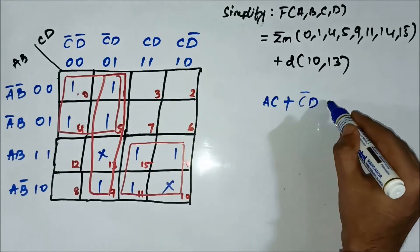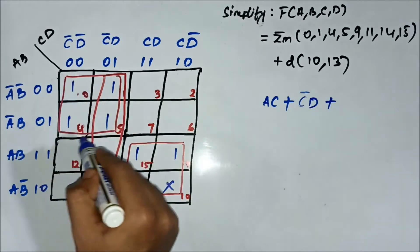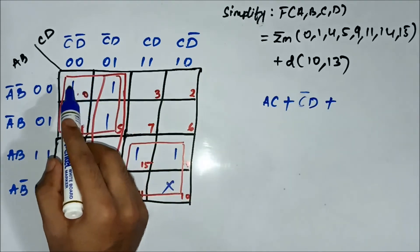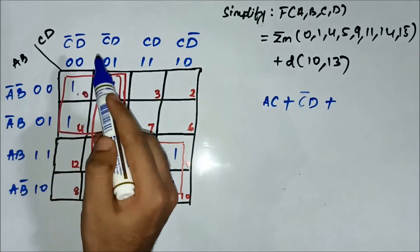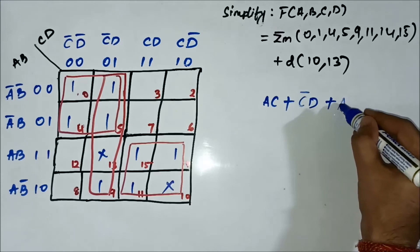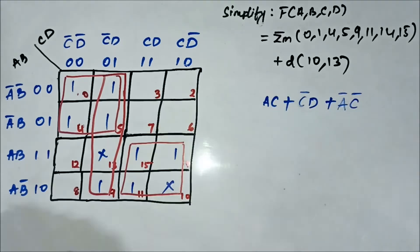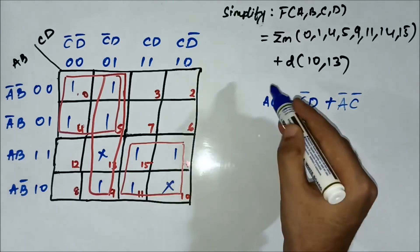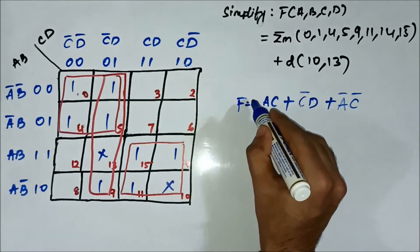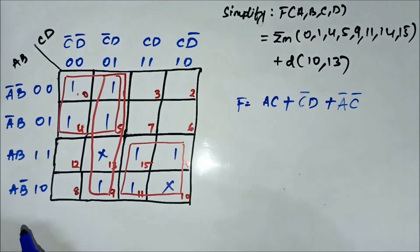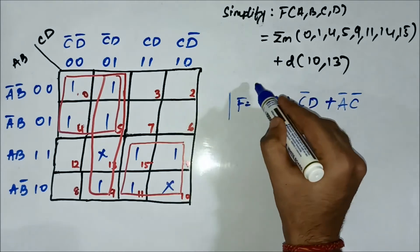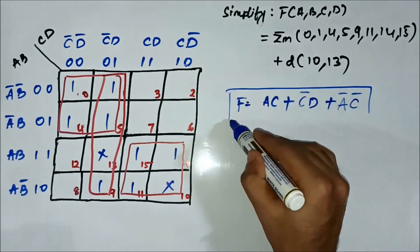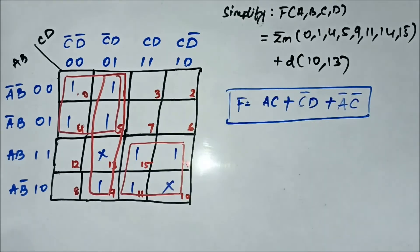For the quad involving cells 0, 1, 4, 5: in the horizontal side we have Ā common, in the vertical side we have C̄ common, giving us Ā·C̄. So the simplified Boolean expression is: Ā·C̄ + A·C + C̄·D.